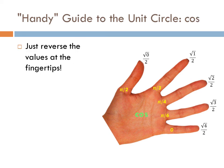For cosine, all you have to do is reverse the values at the fingertips. Starting with the thumb: square root of 0 over 2, then square root of 1 over 2, square root of 2 over 2, square root of 3 over 2, and the pinky ends up with the square root of 4 over 2.